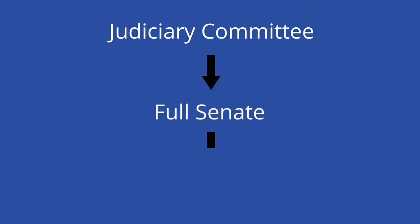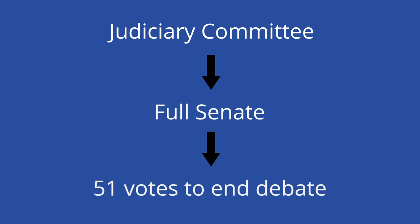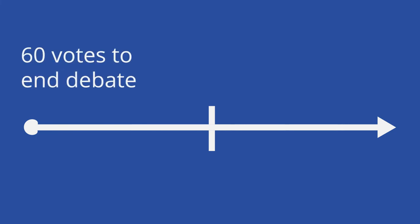Once the hearings are over, the Judiciary Committee will vote to confirm, reject, or abstain, and this recommendation will be passed over to the rest of the Senate. This majority vote to confirm is necessary in order to send the vote to the full Senate. The Senate will then debate, allowing for filibustering, which can delay or prevent legislative action. For the debate to end, 51 Senators must agree to end the debate. The Senate rule used to require the approval of 60 Senators to end debate.